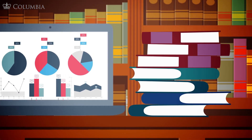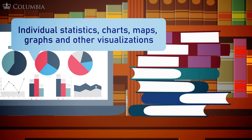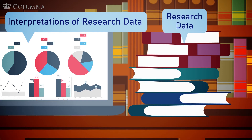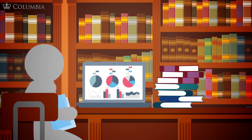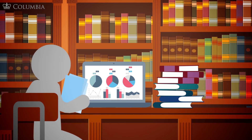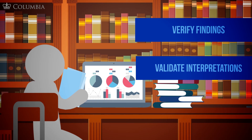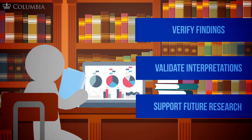But one of the biggest misconceptions about research data is that we often think of it in terms of individual statistics, charts, maps, graphs, and other visualizations. These are actually interpretations of research data, rather than the research data itself. When the underlying research data is available, it can be used to verify findings, validate interpretations, and support future research.